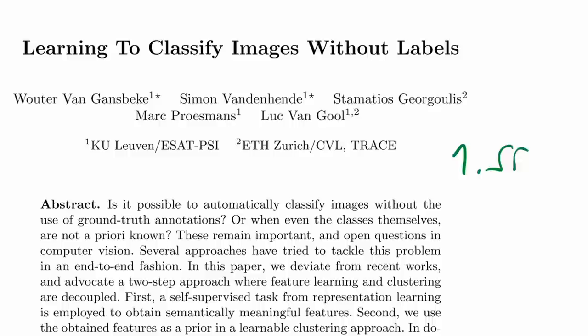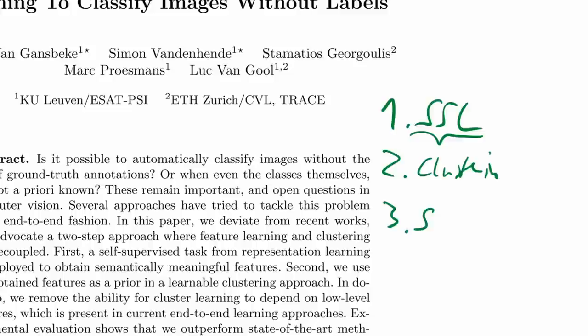They use self-supervised learning to get good representations, then do a sort of k-nearest neighbor clustering on top of those representations in a special way, and then do refinement through self-labeling. If you know what all of these are, you basically understand the paper already, but there are some tricky steps in there, and it's pretty cool that at the end it works out as you just saw.